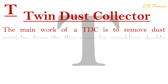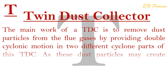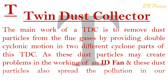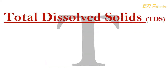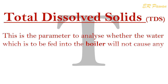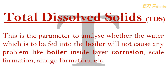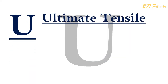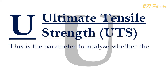T — Twin Dust Collector (TDC): The main work of a TDC is to remove dust particles from flue gases by providing double cyclonic motion in two different cyclone parts. These dust particles can create problems in the working of an ID fan and also spread pollution in the environment. Total Dissolved Solids (TDS): This is the parameter used to analyze whether the water fed into the boiler will not cause problems such as inside layer corrosion, scale formation, sludge formation, etc.